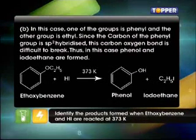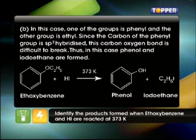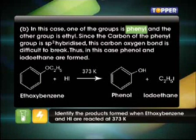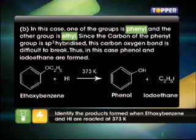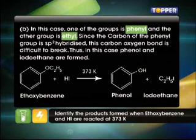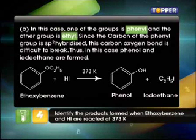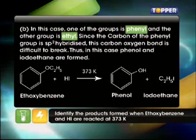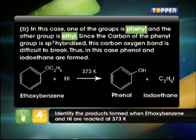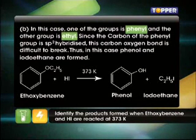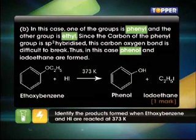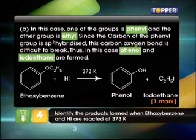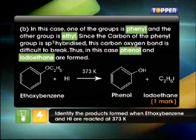B. In the second case, one of the groups is phenyl and the other is ethyl. Since the carbon of the phenyl group is sp2 hybridized, this carbon-oxygen bond is difficult to break. So in this case, phenol and iodoethane are formed. This step will fetch you another mark.